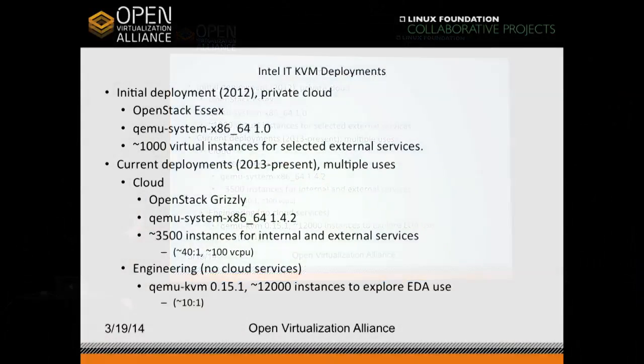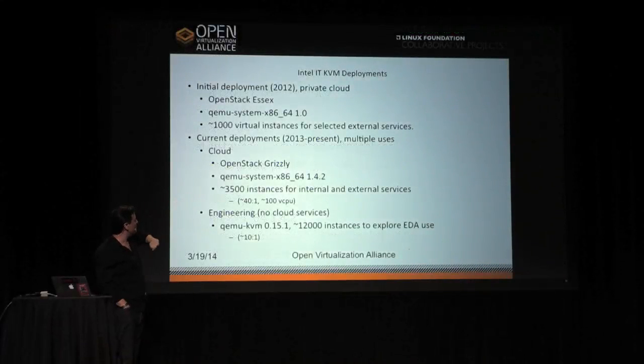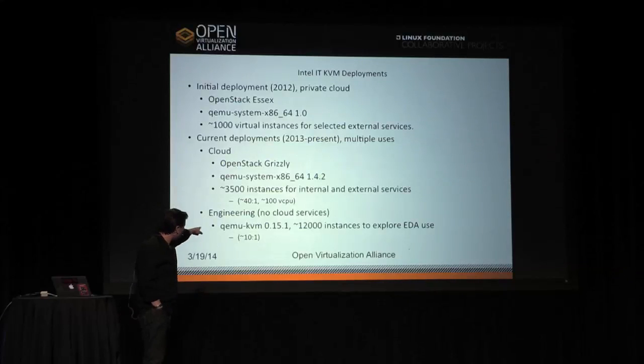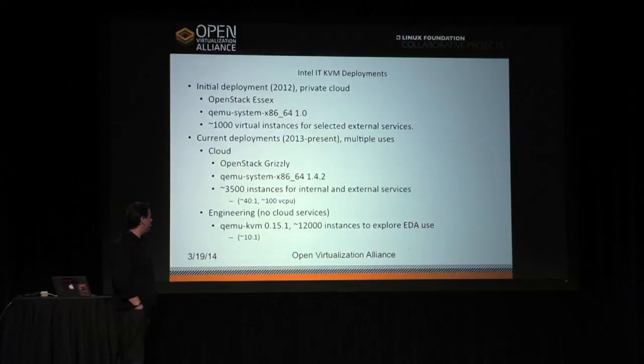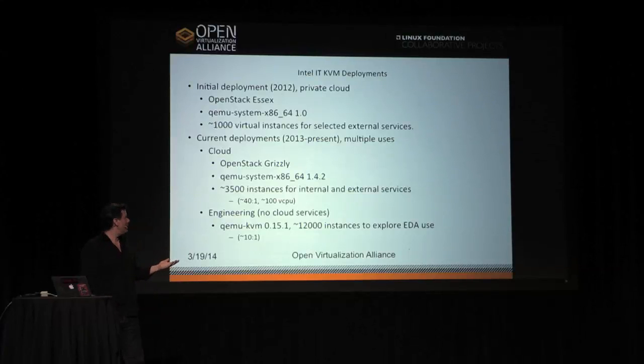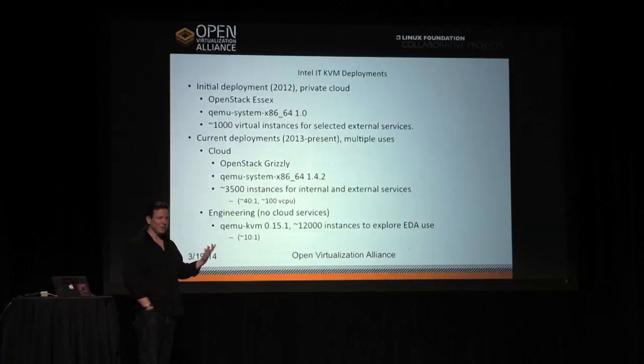These numbers aren't going to look very exciting, especially to anyone doing public cloud, but here's a little background on what we've done. My involvement with OpenStack goes back to Cactus. We deployed a production private cloud back in 2012 on Essex. Our version of KVM at that time was the 1.0 release. There's a bit of divergence in the KVM code base — you get either QEMU system x86-64 or QEMU KVM 0.15.1 depending on your distribution. We had about 1,000 virtual instances for external services. It felt very early and fresh at the time, though it's old hat now.